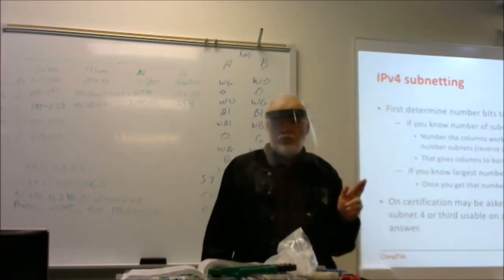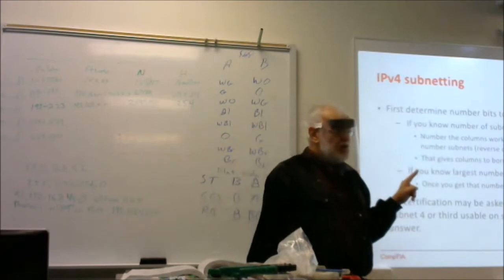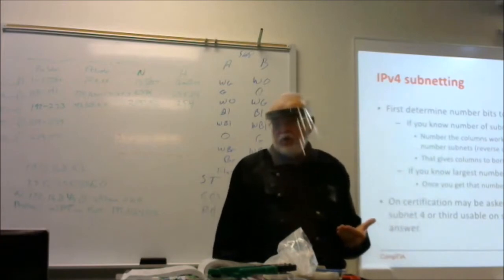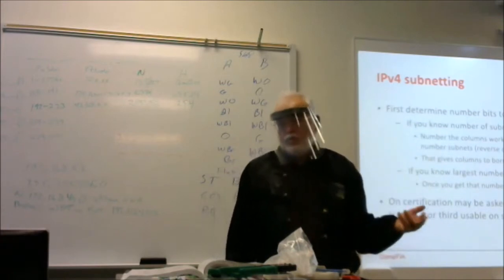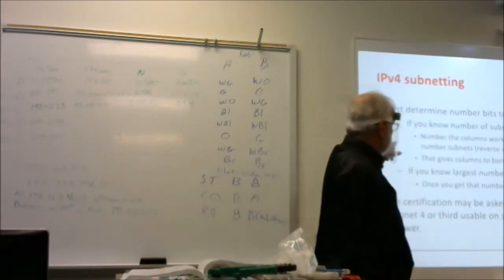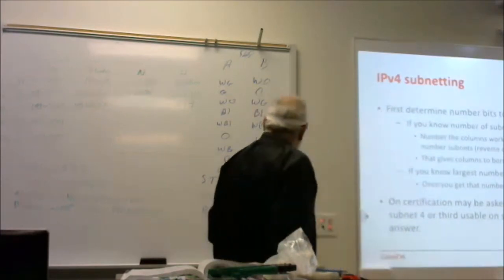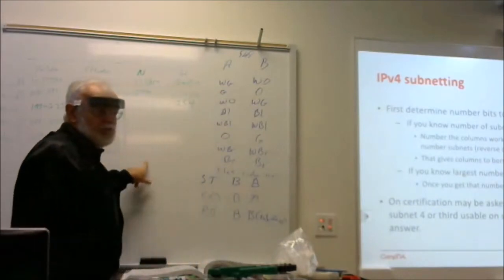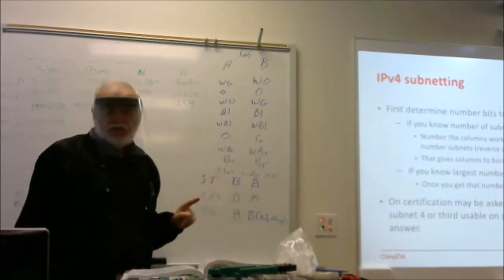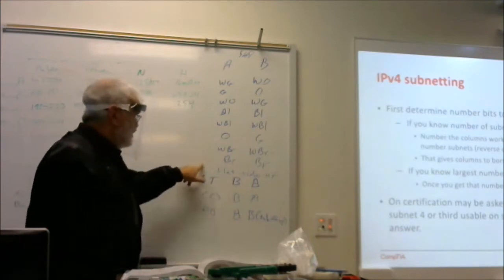There are two ways we can do that. If we know how many subnets we want — and a test question will either tell you they want so many subnets or so many hosts per subnet — if we know how many subnets we want, we're going to borrow from the left, however many bits it takes to get those subnets. If we know how many hosts we want per subnet, we're going to count from the right.